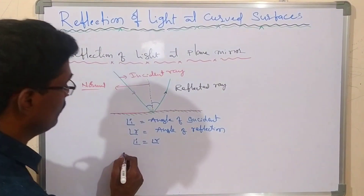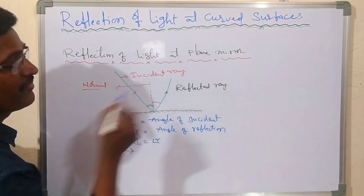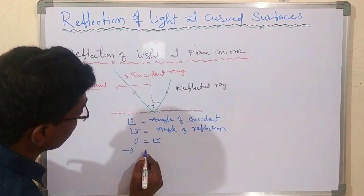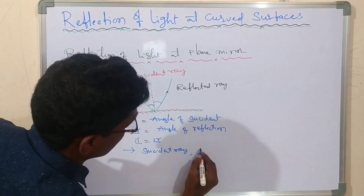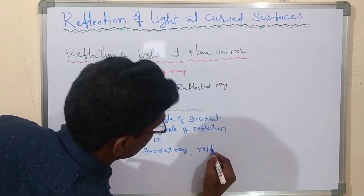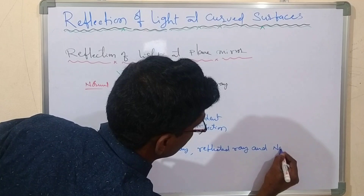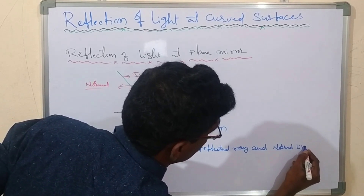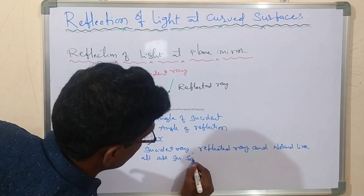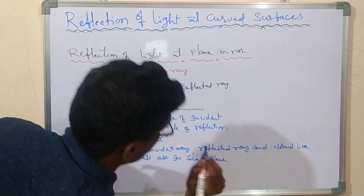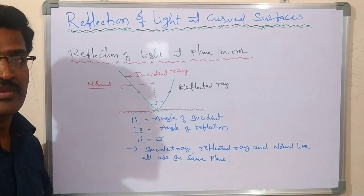One more point to know: the incident ray, the normal line, and the reflected ray — all three are in the same plane. This is the law of reflection of light at a plane mirror.